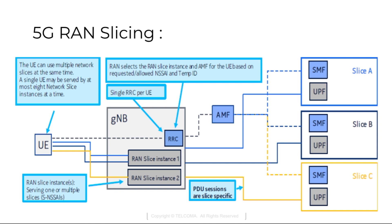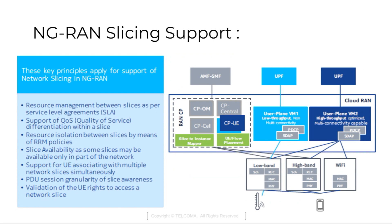The NG-RAN supports resource isolation between slices. NG-RAN resource isolation can be achieved by means of RRM — Radio Resource Management — policies and protection mechanisms. These mechanisms should avoid that a shortage of shared resources in one slice breaks the Service Level Agreement for another slice.